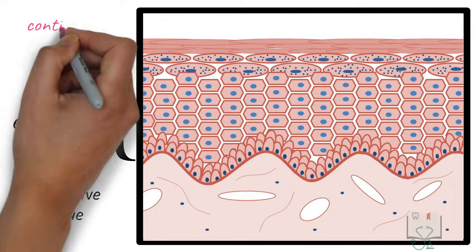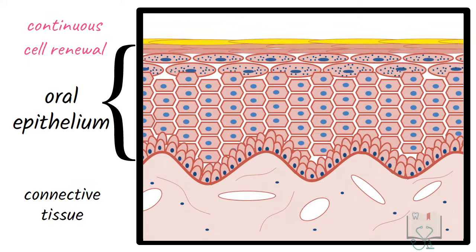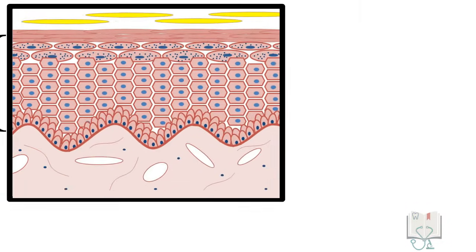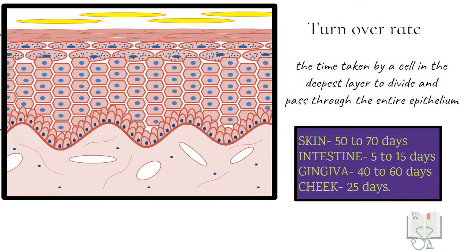The structural integrity of an epithelium is maintained by continuous cell renewal, in which cells are produced by mitotic divisions in the deeper layer, which then migrate to the surface while undergoing maturation, and after reaching the surface, shed off. Turnover rate is the time taken by the cell in the deepest layer to divide and pass through the entire epithelium.